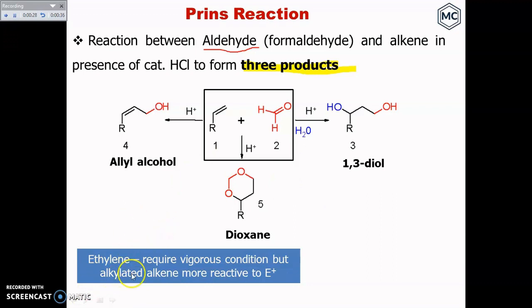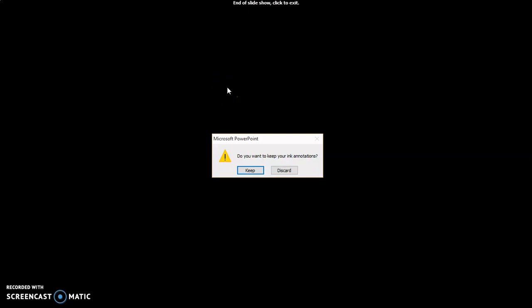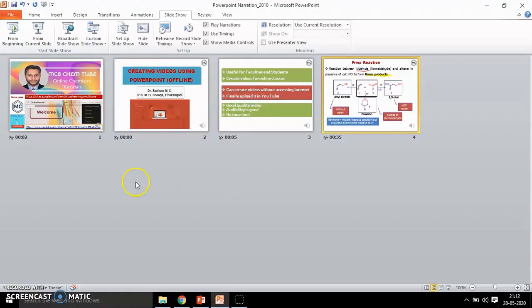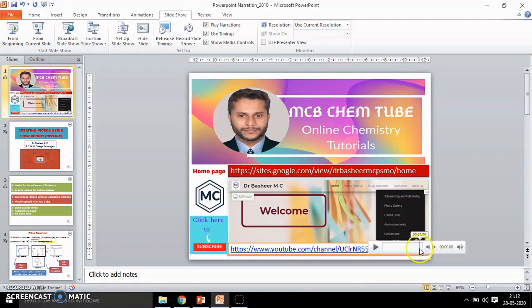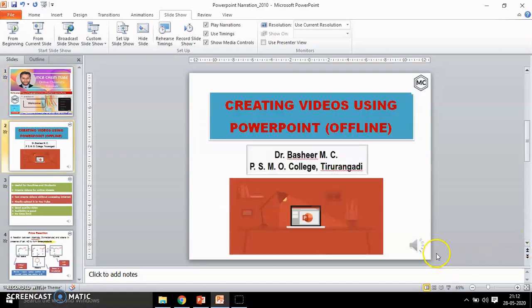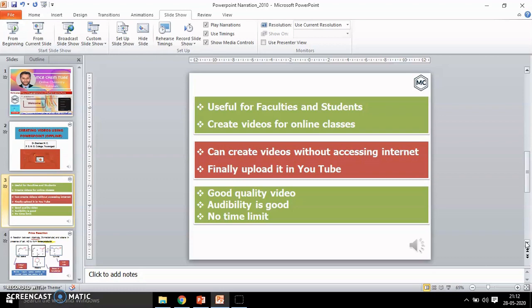Then at the end, after your recording, it will ask like this. Do you want to keep your ink and auditions. You can keep it. Then you get a window like this. After this, if you suppose you want to play your recording, you can play it from the beginning. Start the slideshow from this first slide. And you can see here, there is a recorded audio here in each slide. You can see here. And you can play it.